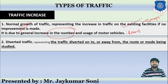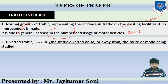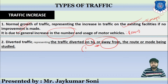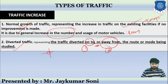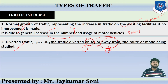Then comes diverted traffic. As the name suggests, diverted traffic represents the traffic which is diverted onto or away from the route or mode which is being studied. For example, at a junction, few vehicles can divert to it and few can divert away from it. This gives us diverted-to and diverted-from traffic, and all this traffic will be considered.